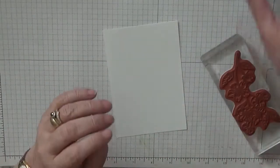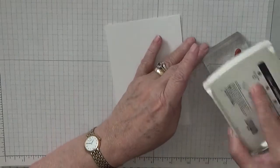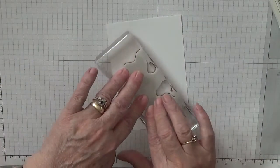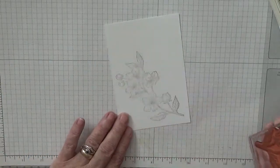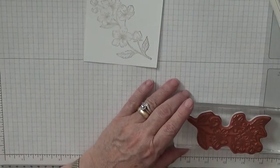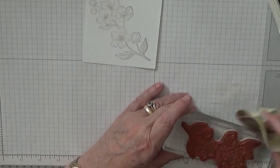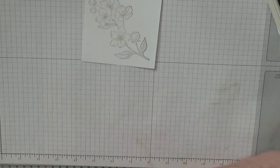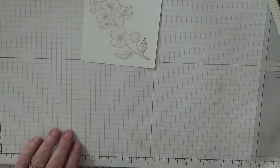I'm going to stamp the flower first and we're going to stamp it in Crumb Cake. I'll just stamp that on there like that. There we are. I'll just put that to one side, we'll color that in shortly.